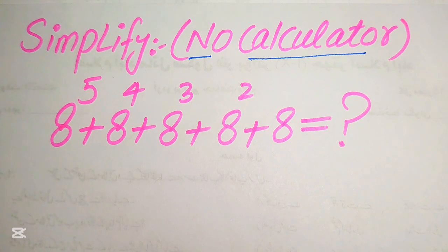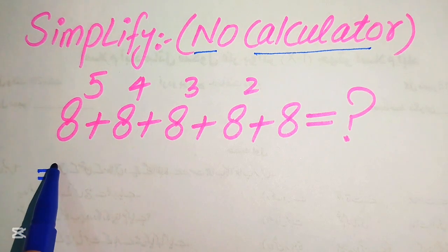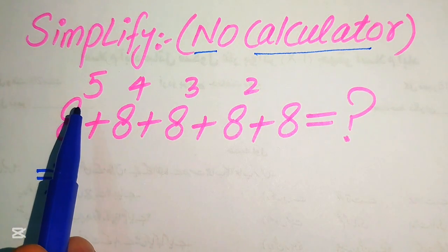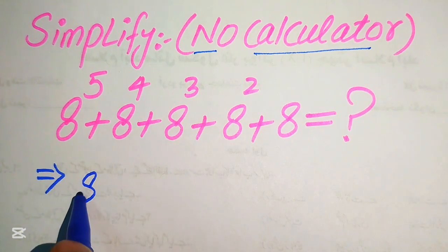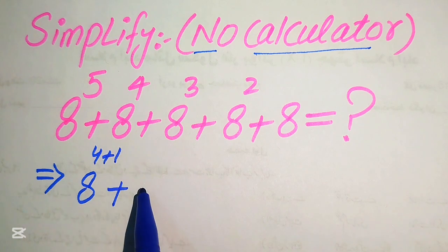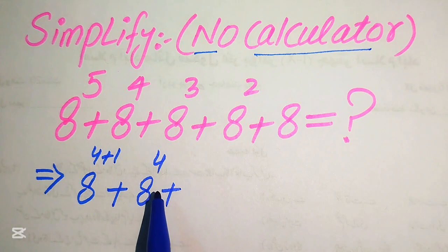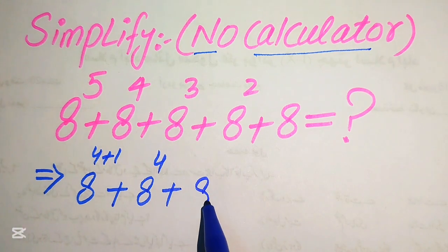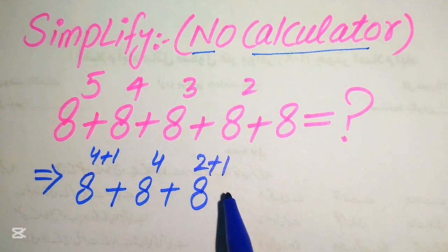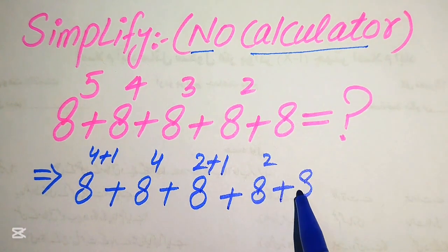Please watch the complete video so that you understand the tricks. First we need to break the exponent of this term. The exponent is 5, so we write it as 8 to the power of 4 plus 1. We write the next term as it is: 8 to the power of 4. Then we break the next term as 8 to the power of 2 plus 1, followed by 8 squared, plus 8.